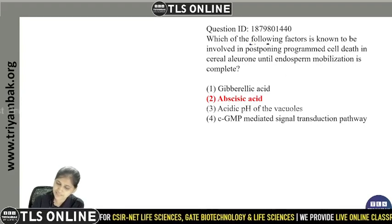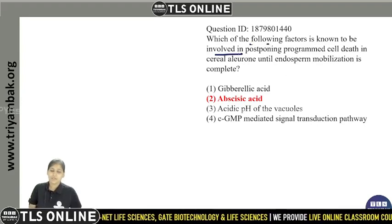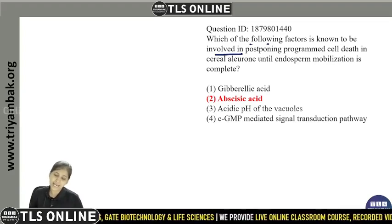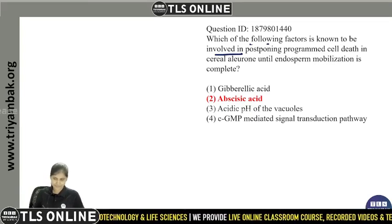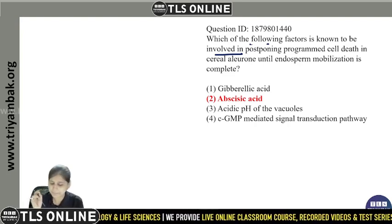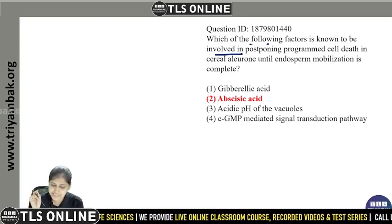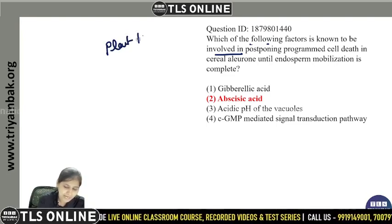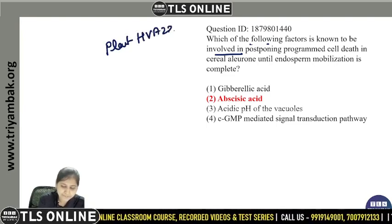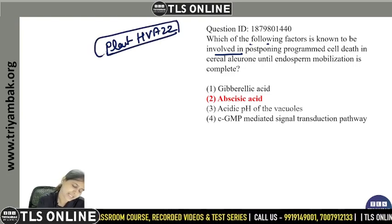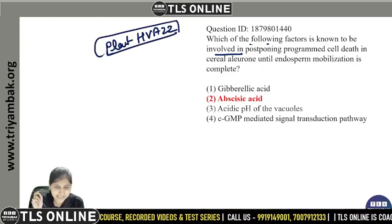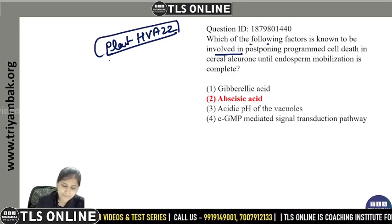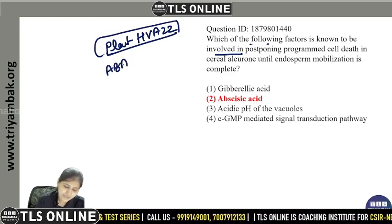Which of the following factors is known to be involved in postponing programmed cell death in cereal aleurone until endosperm mobilization is complete? The answer is Plant HVA22 protein — you can also call it a unique type of abscisic acid, or an abscisic acid-induced protein.